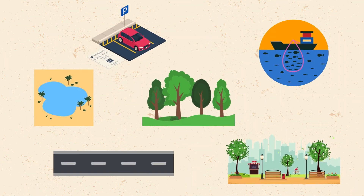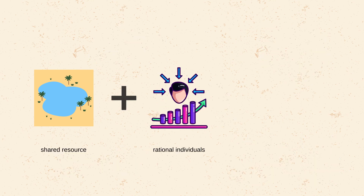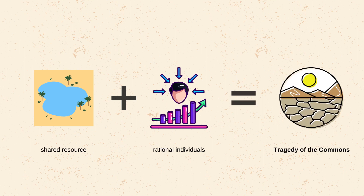Whenever there is a shared resource available for use by multiple individuals, but whose supply is finite or can be depleted — like forests, fisheries, clean water sources, parks, roads, or parking spaces — and if there exist rational individuals that maximize their own utility or self-interest, then we will have the tragedy of the commons.